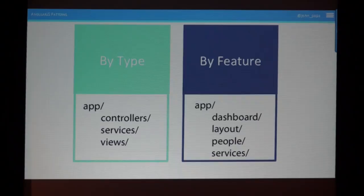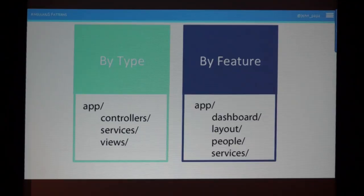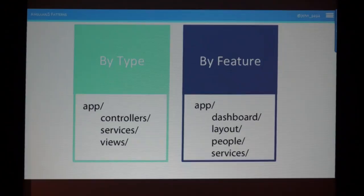The computer doesn't care how you store your files — the browser is going to look at some minified file at the end. So pick a way that's easy for your team. By feature organizes things by what you're working on: your user stories, like a dashboard, customers, orders. Maybe have a shared or services folder for things shared throughout the application. The nice thing is this lends itself more easily to expanding your application as you grow.